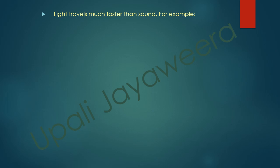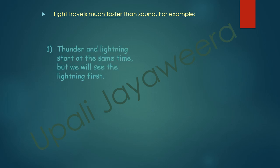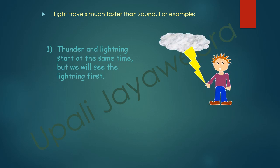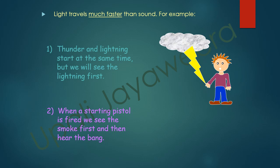Light travels much faster than sound. Thunder and lightning start at the same time, but we see the lightning first because the speed of light is greater than the speed of sound. Similarly, when a starting pistol is fired, we see the smoke first and then hear the bang.